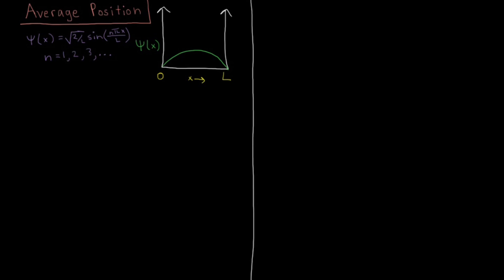In this video we're going to calculate the average position of the particle in a box given its wave function. To calculate the average position we need to use a concept called an expectation value. If we have some property A, we denote the expectation value of A by angle brackets. That equals the integral from minus infinity to positive infinity of psi star — the complex conjugate of the wave function — times the operator for property A, times the wave function again. The operator acts on the wave function, we multiply by the complex conjugate, and integrate over the entire domain to get the average value.